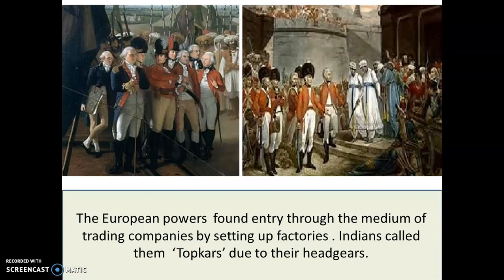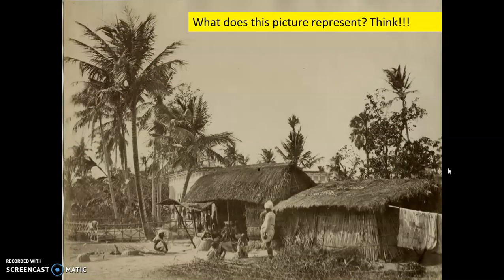These European powers slowly found entry by establishing various trading companies — the East India Company is one such company. They then set up their warehouses, or factories, or what we call godowns, where they would store their goods, which would later be sold in Indian markets. Indians called these foreign powers as Topkars because of their characteristic headgears. If you look at this picture, you will see that all these Europeans are wearing very distinct headgear, and therefore Indians called them Topkars.